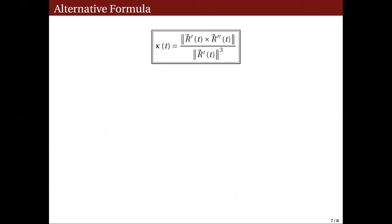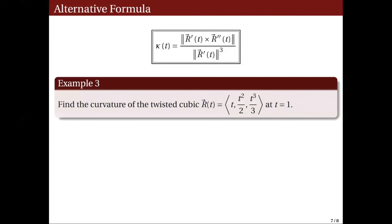There is another alternative formula for the curvature that uses only the first and second derivatives of the vector function R. Kappa(t) equals the norm of R'(t) cross R''(t), divided by the cube of the norm of R'(t). This is stated as Theorem 7.5.4 in the module of Mathematics 22. If you want to see the proof, you may refer to that theorem. Let us use this alternative formula to determine the curvature of the twisted cubic represented by R(t) = (t, t²/2, t³/3), particularly at t = 1.